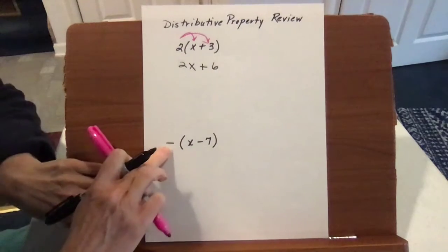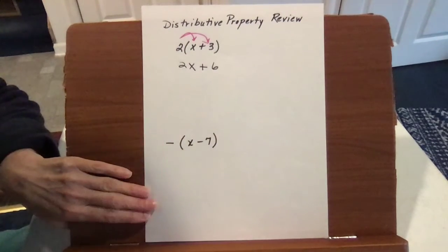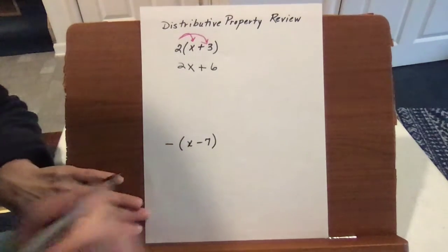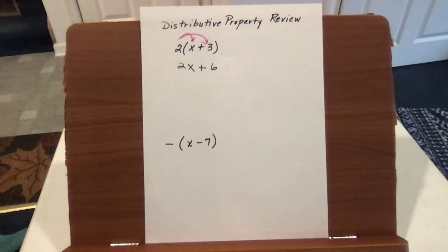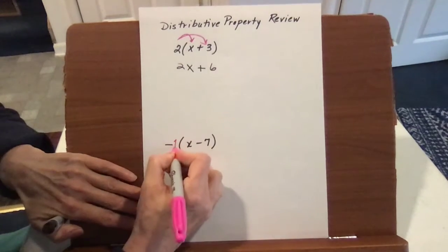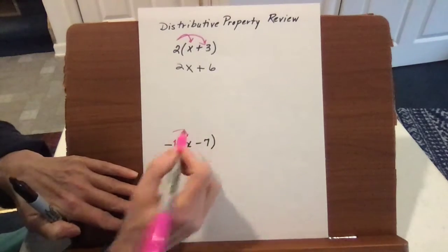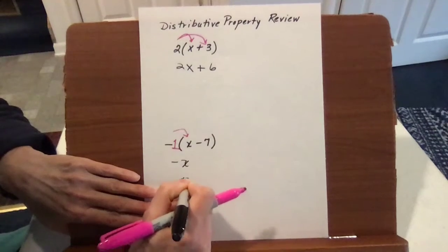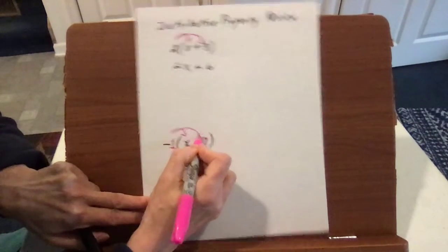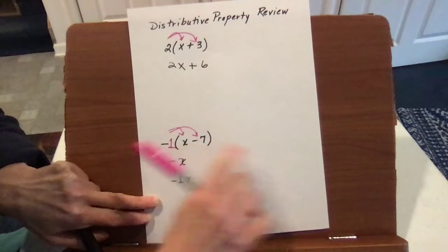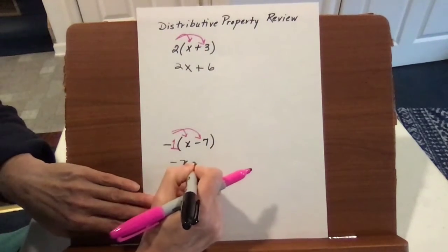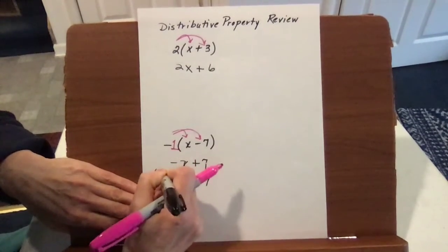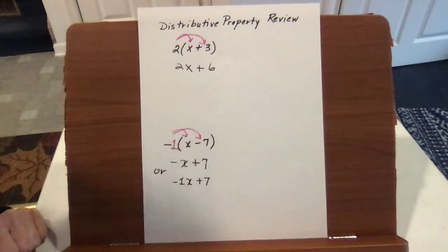In this next case, we have a negative quantity of x minus seven, so you're taking the opposite of all of the operations or signs inside the parentheses. You can think of it as a negative one — negative one times x becomes negative x, and negative one times negative seven becomes plus seven. Those are your answers for the distributive property.